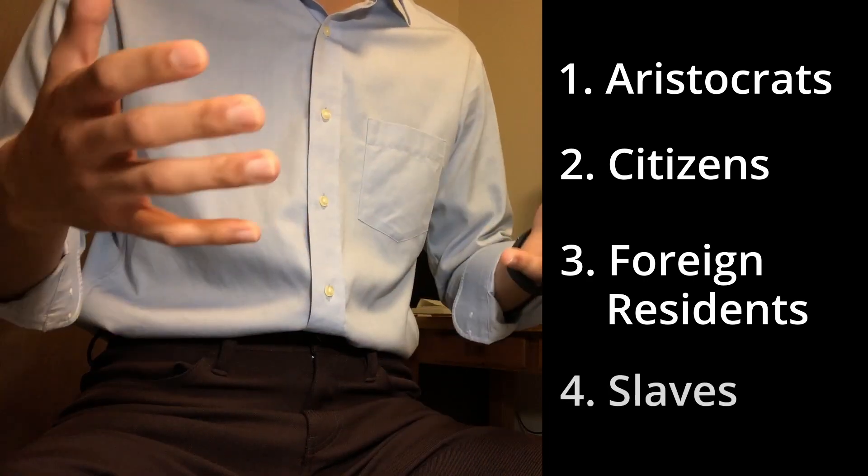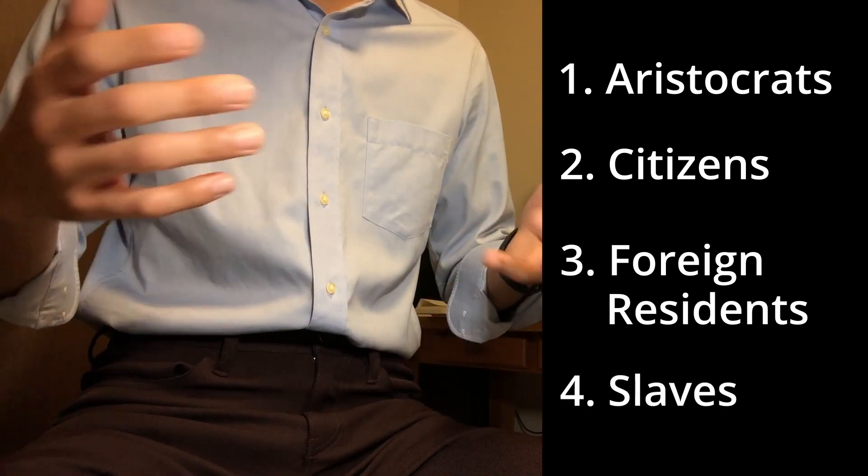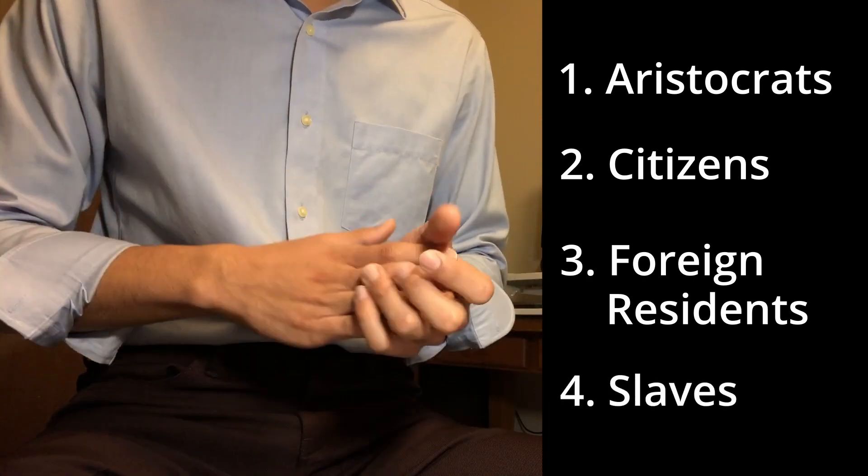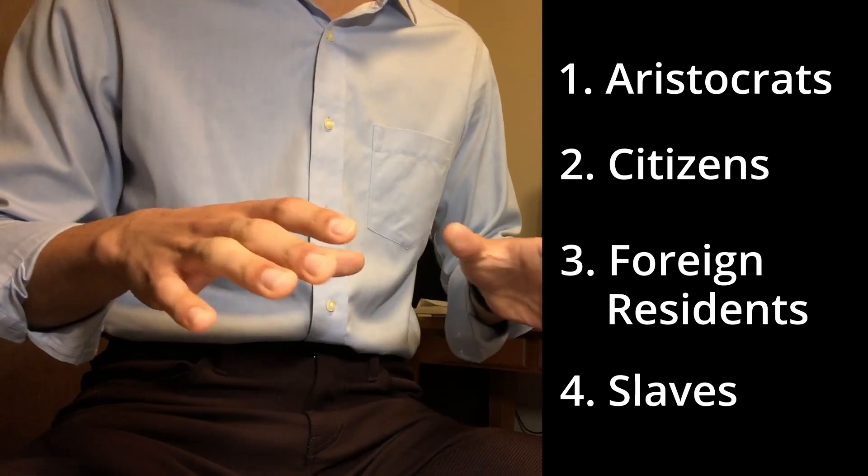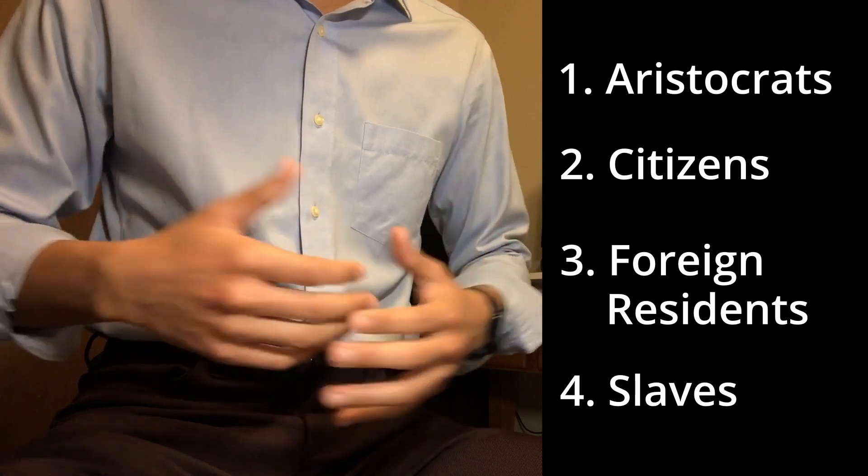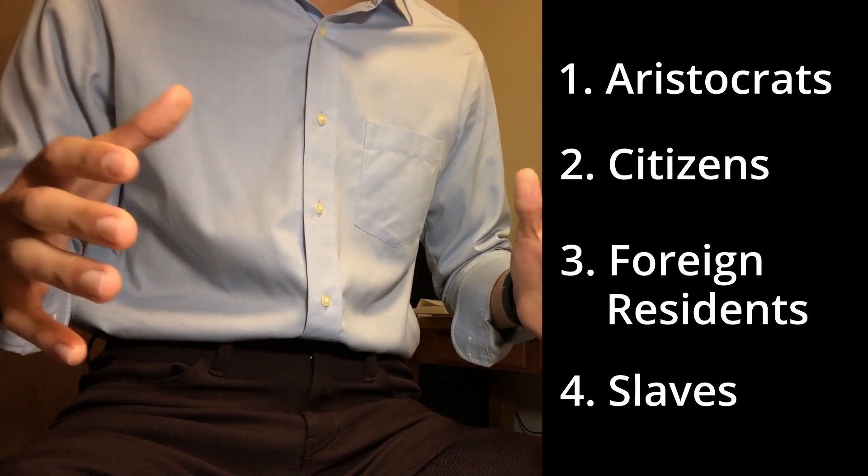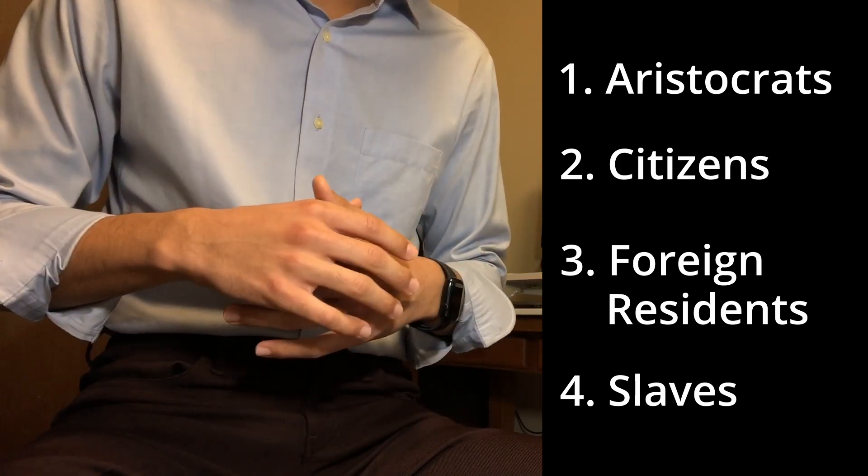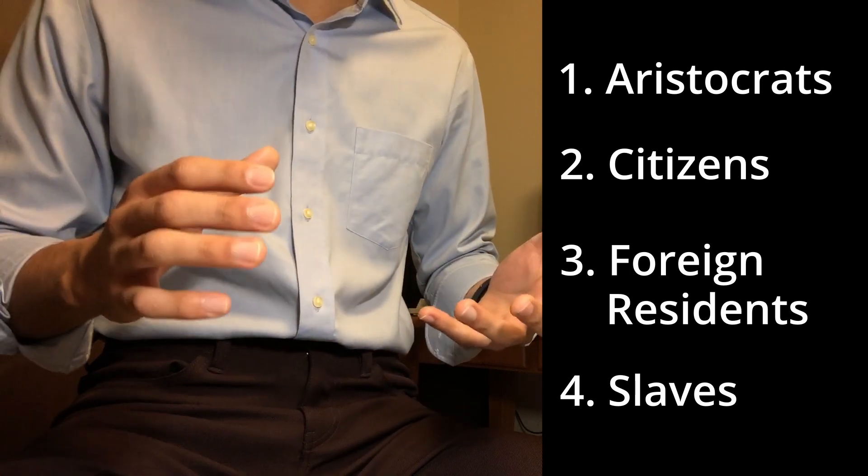The Greeks also had slaves, although there are some uncertainties regarding the institution. It is estimated that one-fourth of the Athenian population were slaves, and it seems like most slaves were women.